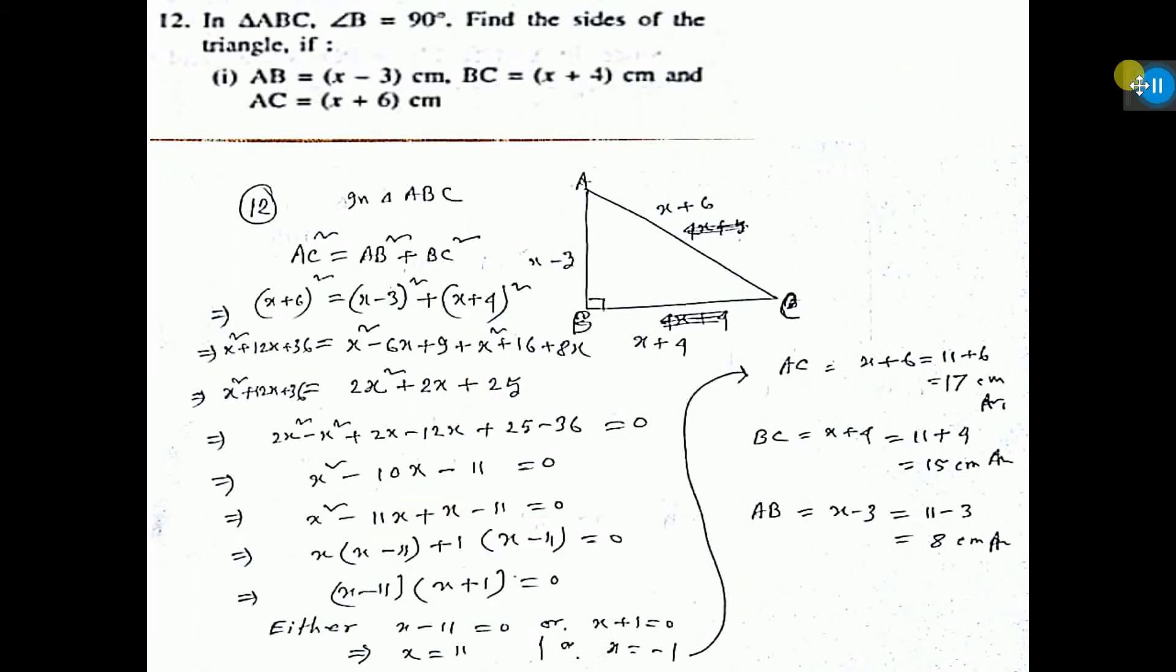In this question, in triangle ABC, angle B is 90 degrees. So here B, 90 degrees I have written.